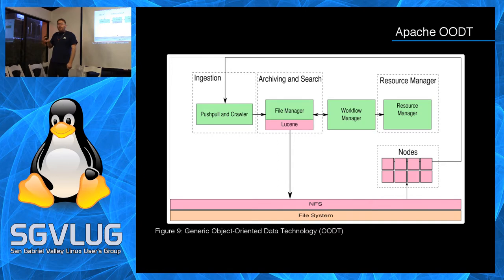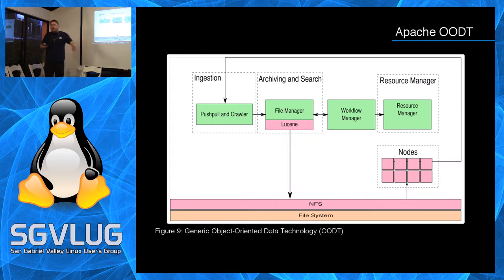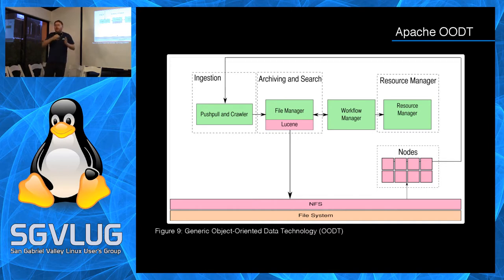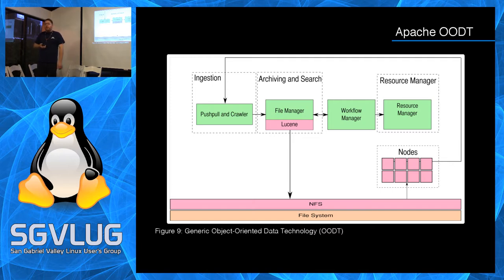The one thing Apache OODT adds beyond what we've discussed is a workflow manager. The idea of a workflow is simple: you want to process something, then something else, then something else — a pipeline. If you have three independent applications that all run on data, the workflow manager keeps track of that orchestration so your processing runs in the correct order. This is the data system as shipped to Apache and used across the open source community at NASA and several other research institutions.